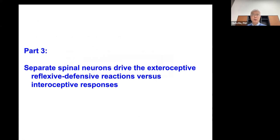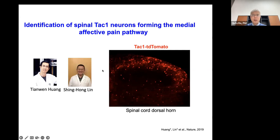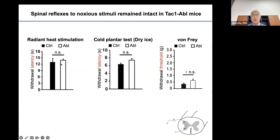This means there is an anatomical and functional segregation from developmental biology into function. At the spinal cord level, we found a similar anatomical and functional segregation. We published a paper identifying a group of spinal cord neurons marked by TAC1, which encodes substance P. Using a genetic tool that selectively removed TAC1 neurons only in the spinal cord, we studied the behavioral consequences. Measuring all reflex defensive behaviors — mechanical, heat, cold — there was no major defect. Behavioral thermoregulation and electric shock-induced freezing were all intact in these mice.